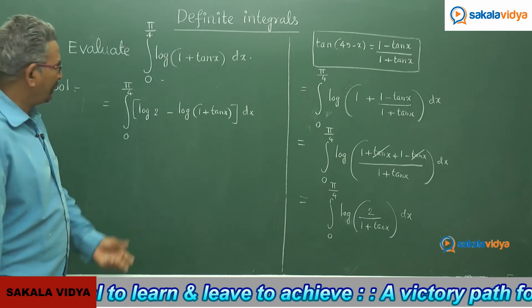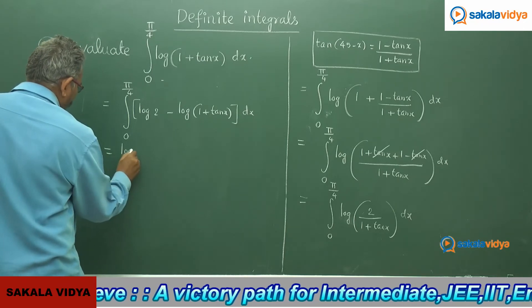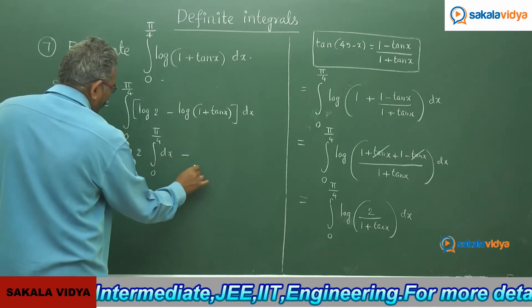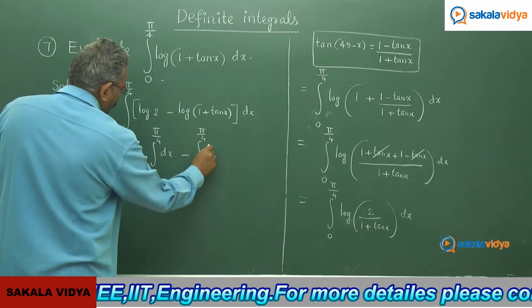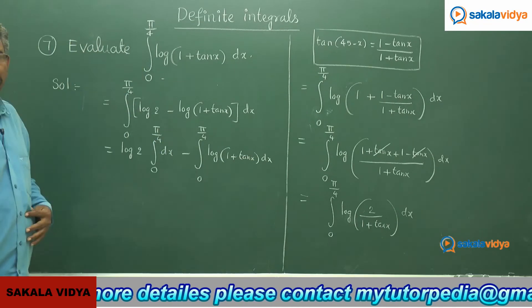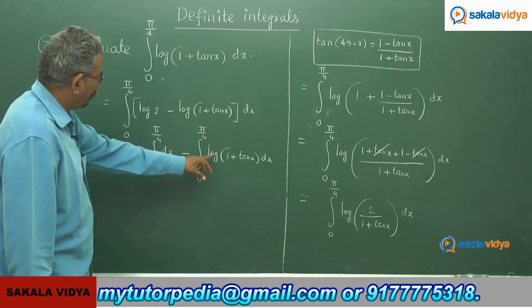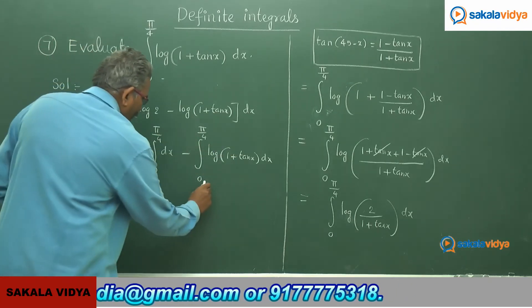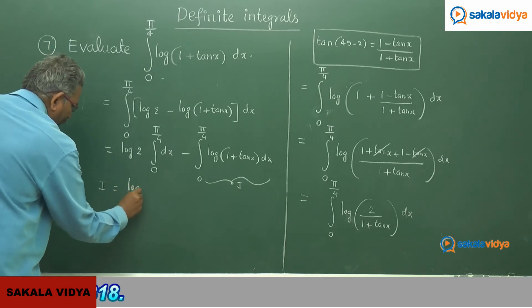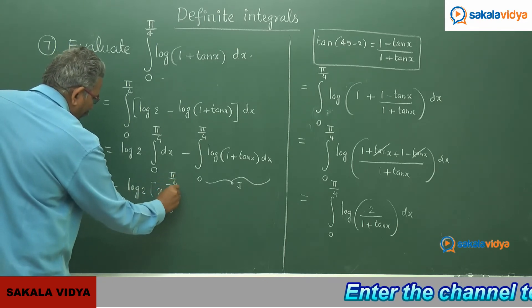We split this as the difference of two integrals: log 2 times integral 0 to pi by 4 of dx, minus integral 0 to pi by 4 of log(1 plus tan x) dx. That second integral can be replaced by i. So we get: i equals log 2 times [x] from 0 to pi by 4, minus i.